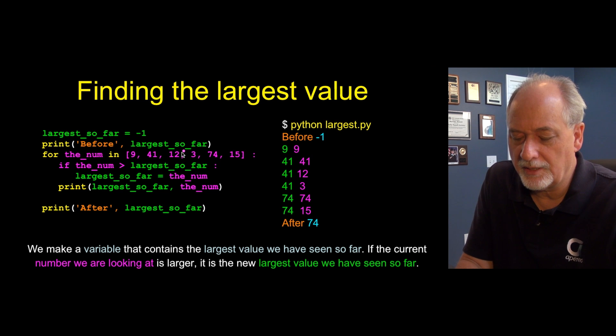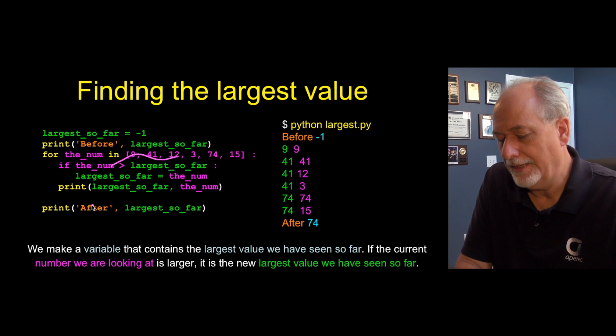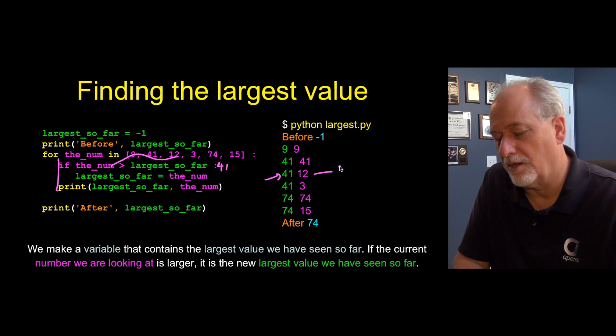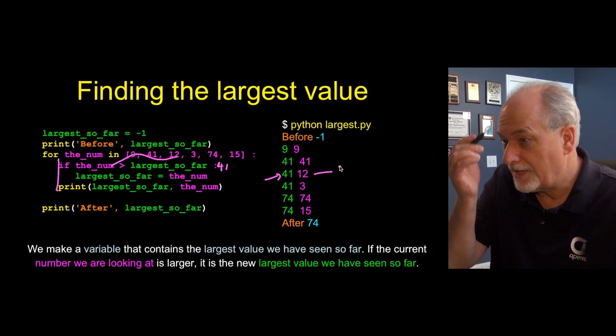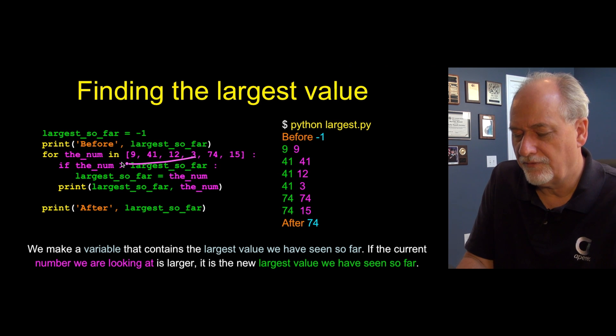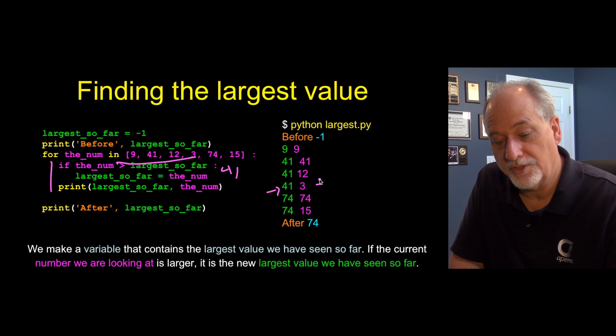Now we're going to run the loop again with 12. And you get the idea I hope. Is 12 greater than 41, which is the largest we've seen so far? The answer is no it is not, so we skip. So the largest so far is 41 even though we saw 12—meaning we're sort of ratcheting up but we never ratchet back down. We run it again with three and 41. We skip this, and then the largest so far is 41 even though we just saw three.